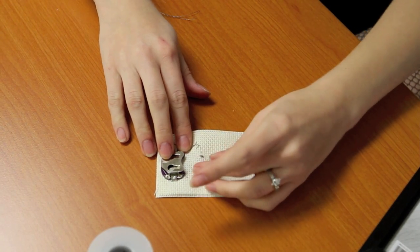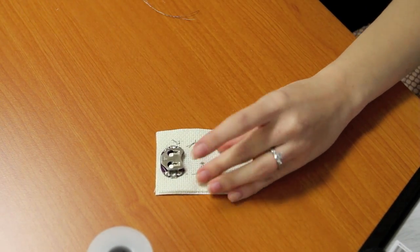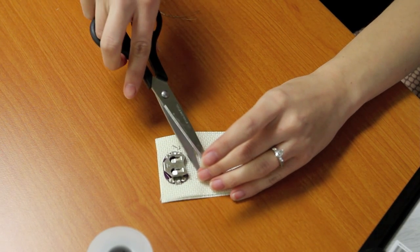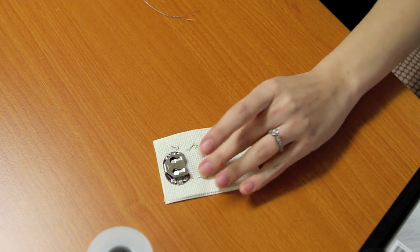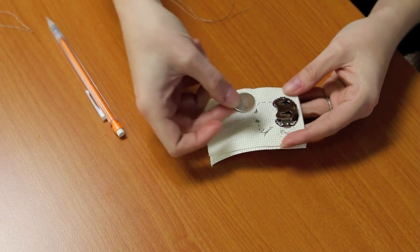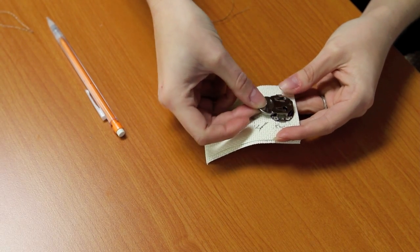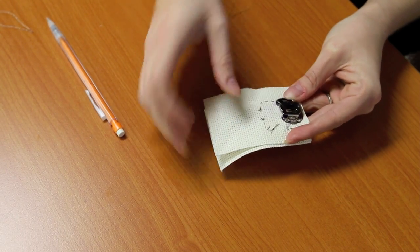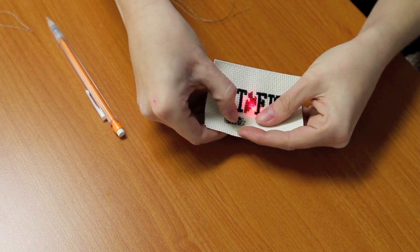It's important that you not leave your thread ends where you've knotted long enough that it's possible for them to touch, because that can short your circuit. The last thing we need to do is put our battery in and turn it on to make sure it works. I'm going to take my 20mm coin cell battery, push it into the holder, and turn on my switch.